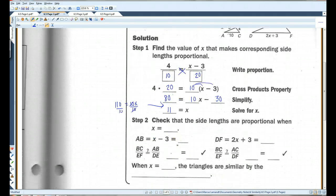We're going to check that the side lengths are proportional when x equals 11. If AB is x minus 3, 11 minus 3 is 8. If I plug in 11 here, 11 times 2 is 22, plus 3 is 25. BC over EF is 4 over 10. AC over DF is 10 over 25. These are also equal. So, when x equals 11, the triangles are similar by the SSS similarity theorem.